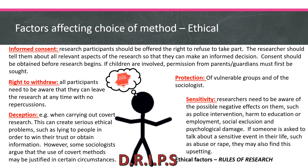The easy way to remember all the ethical factors is the acronym DRIPS: deception, right to withdraw, informed consent, protection and sensitivity. So at this point we've got TRAMP and DRIPS.